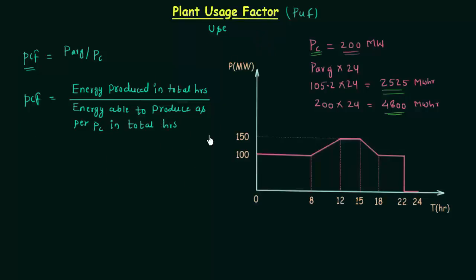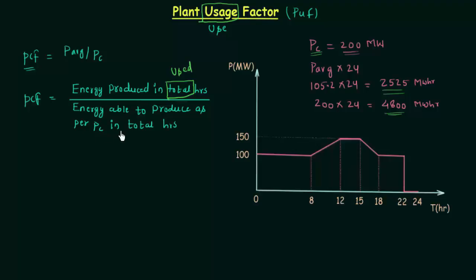In case of plant usage factor there is a slight difference from PCF. In case of plant usage factor, instead of calculating the energy produced in total hours, we will calculate the energy produced in used hours. And in the denominator, instead of calculating energy able to produce as per PC in total hours, we calculate energy able to produce as per PC in used hours.